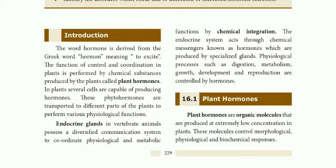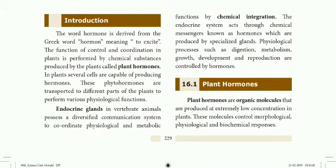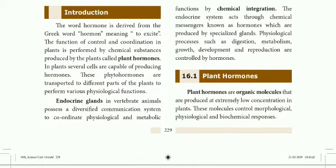The hormone is secreted to reach the blood. The hormone secreted then travels through the blood to reach the target organ. The chemical substances secreted by glands are involved in physiological functions and metabolic functions.